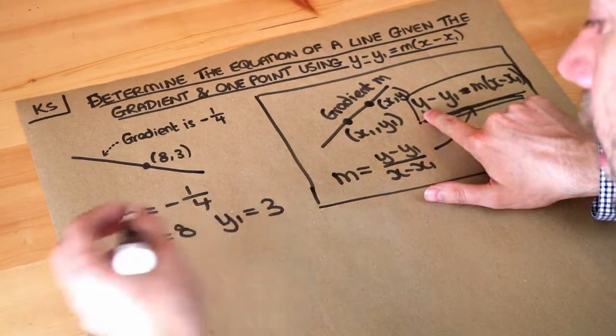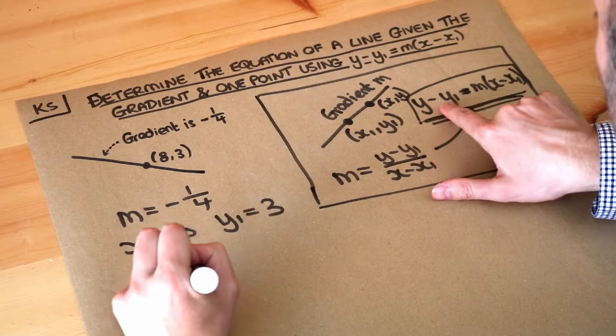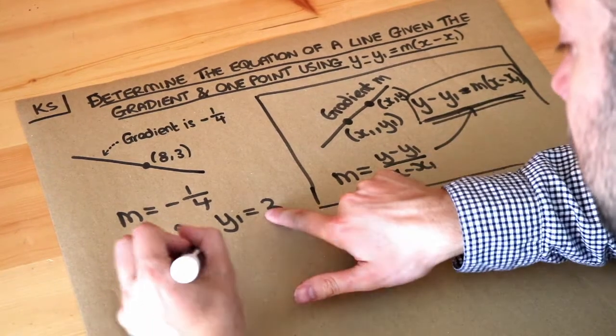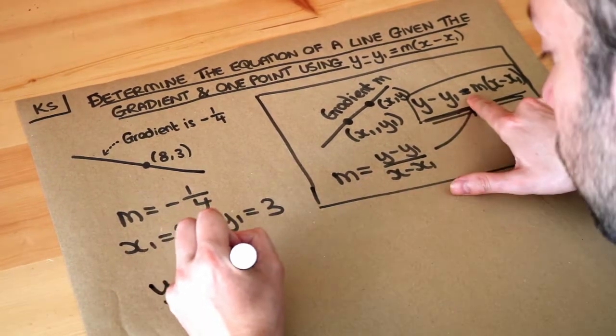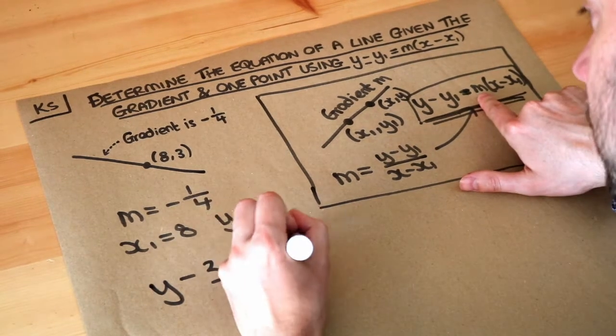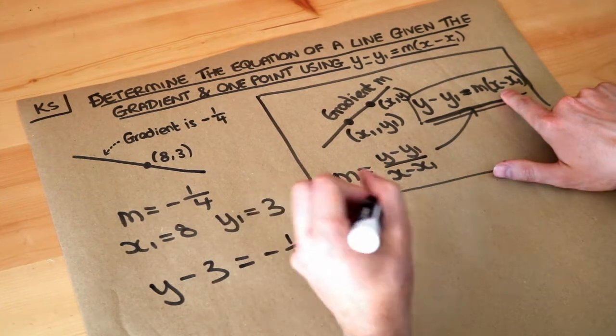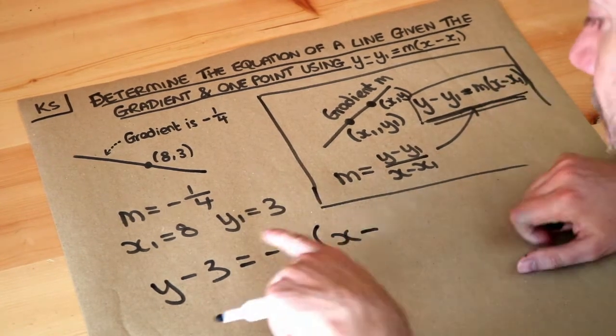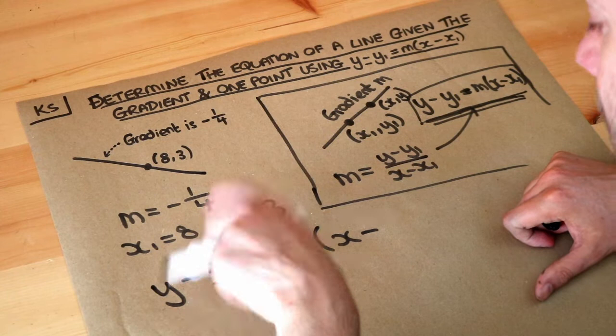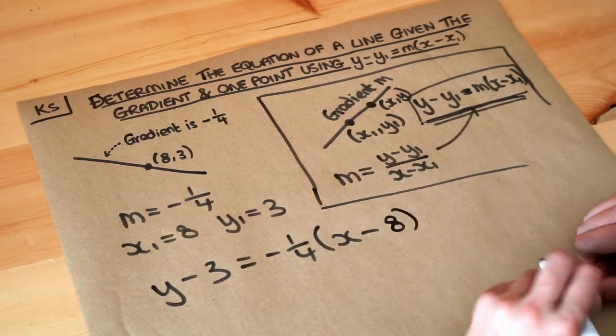So we've got y, which is just y, minus y1, which is 3, equals m, which is minus a quarter, and then we've got brackets x, and x is just x, minus x1. x1 is the x value of the fixed point, which is 8, and we get that.